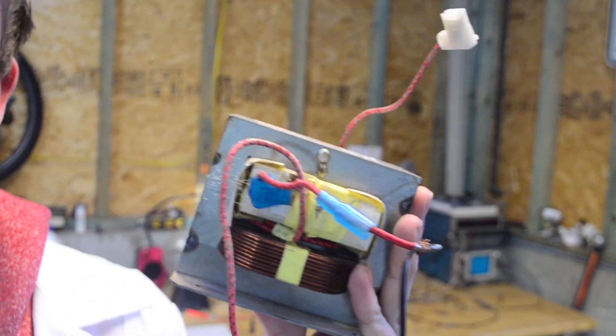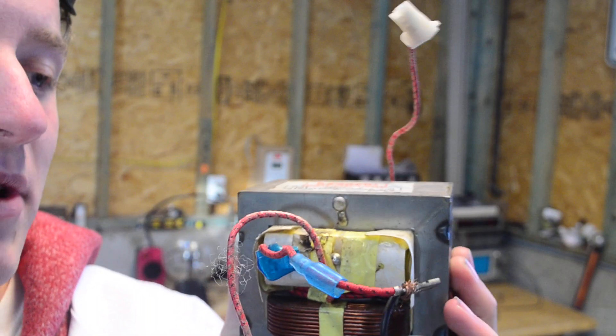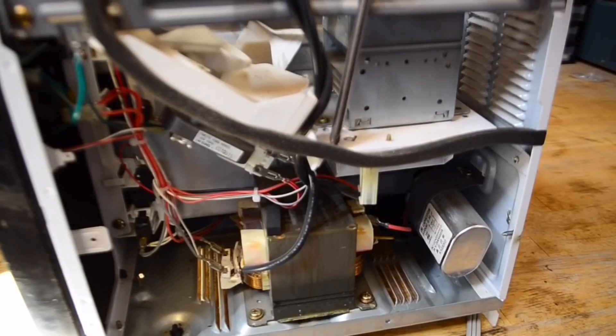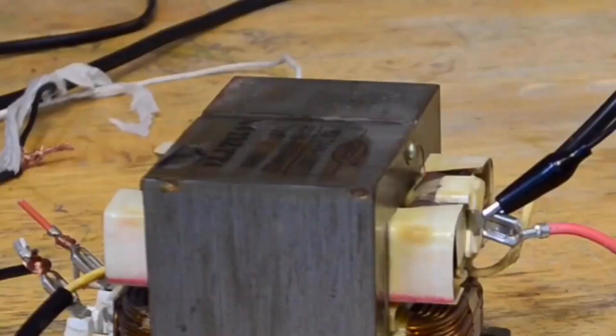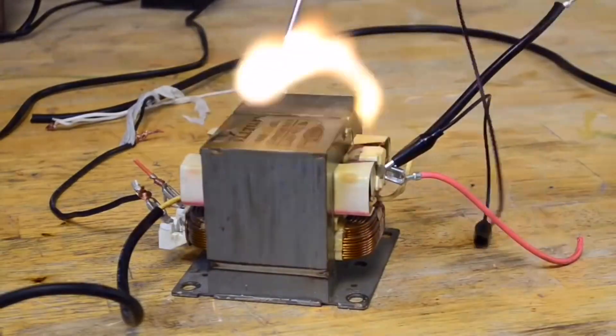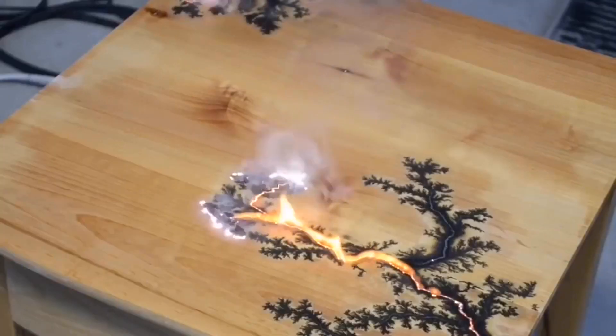Now the main component you're going to need for this video is one of these microwave oven transformers. I made a video a while back showing how to safely extract one of these from a microwave and some of the safety precautions behind it. We've also done a few high voltage experiments using these, as they naturally put out around 2,000 volts.